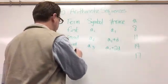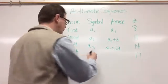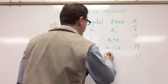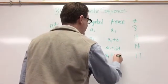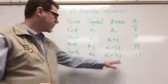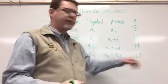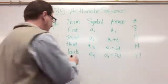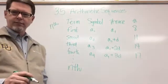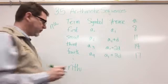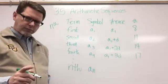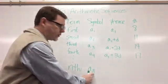What about the fourth term? That would be a sub four. How did I get a sub four? I took a sub one and added three times the common difference. My common difference is three, so three times three is nine, and nine plus eight is seventeen. Now, dot dot dot — I want to find the nth term of the sequence. The nth term would be a sub n, because we don't know which term we're talking about — that's why it's a variable.